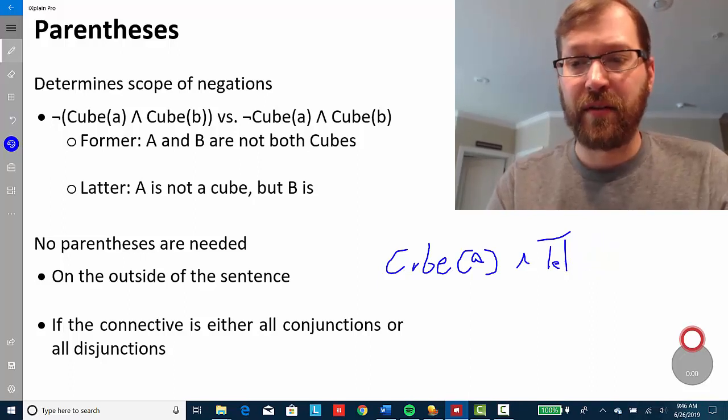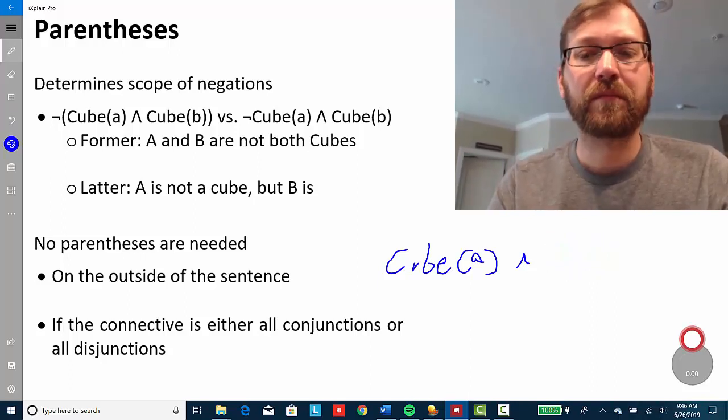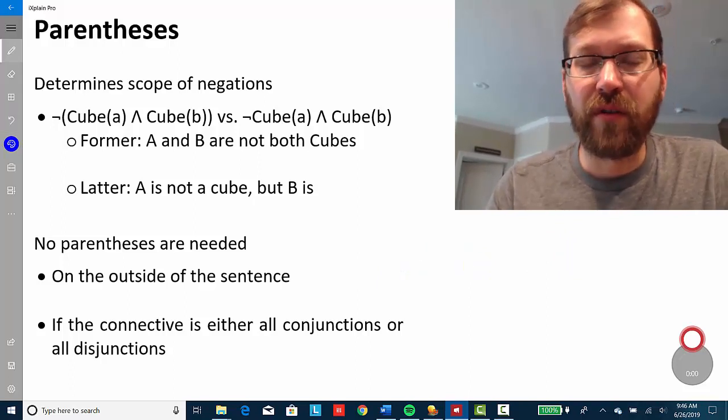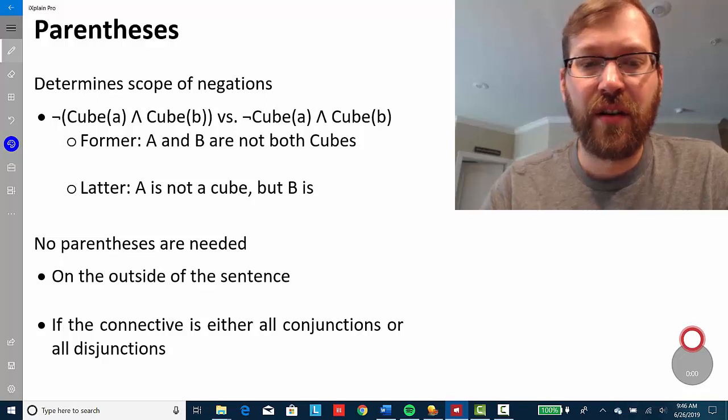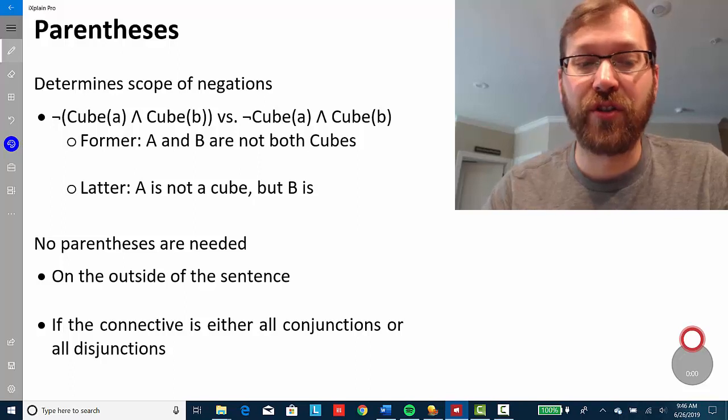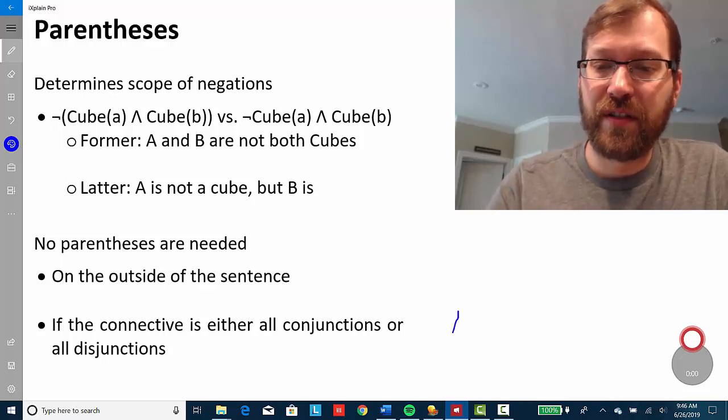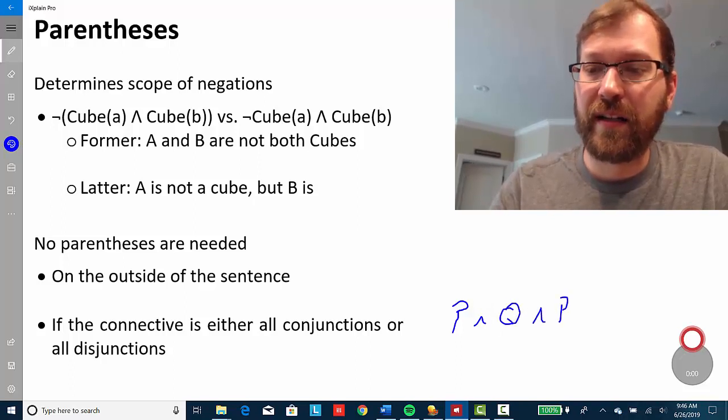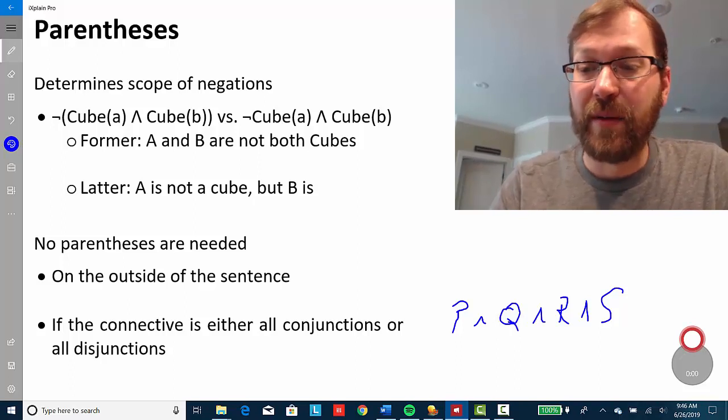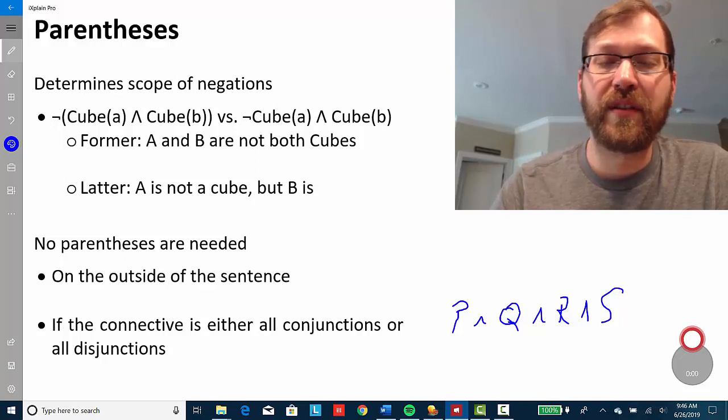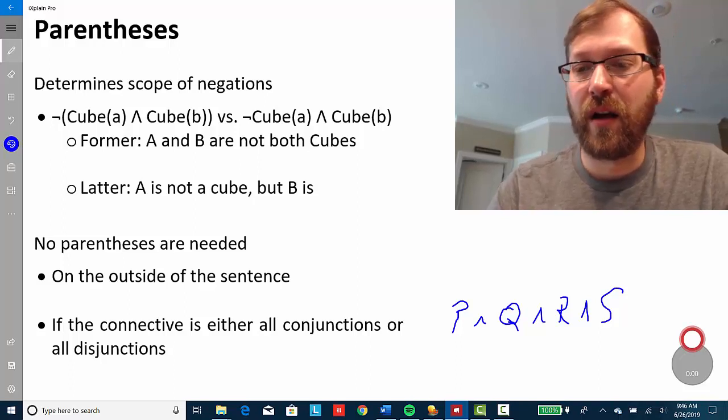Also, our particular textbook allows us to not use parentheses when the connectives in the sentences are either all conjunctions or all disjunctions. So, if it's P and Q and R and S, for example, you don't need any parentheses. And the reason for that is it doesn't matter how you organize the parentheses when they're all conjunction symbols.